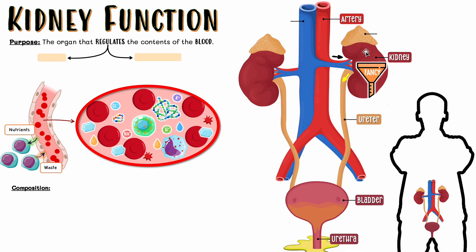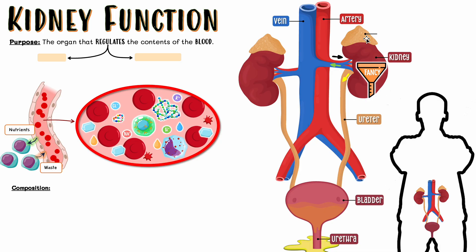The good things — the things we want to keep in our body — are kept inside our blood and leave the kidney through a vein. That vein then carries the filtered blood back towards the heart so it can be pumped again.